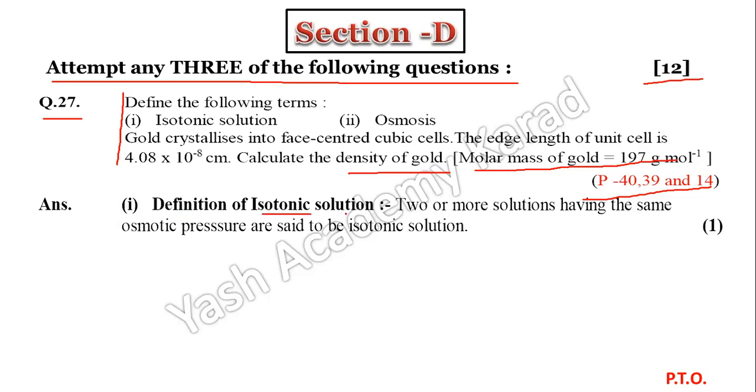First definition: isotonic solution. Isos means same. Two or more solutions having the same osmotic pressure are said to be isotonic solutions.